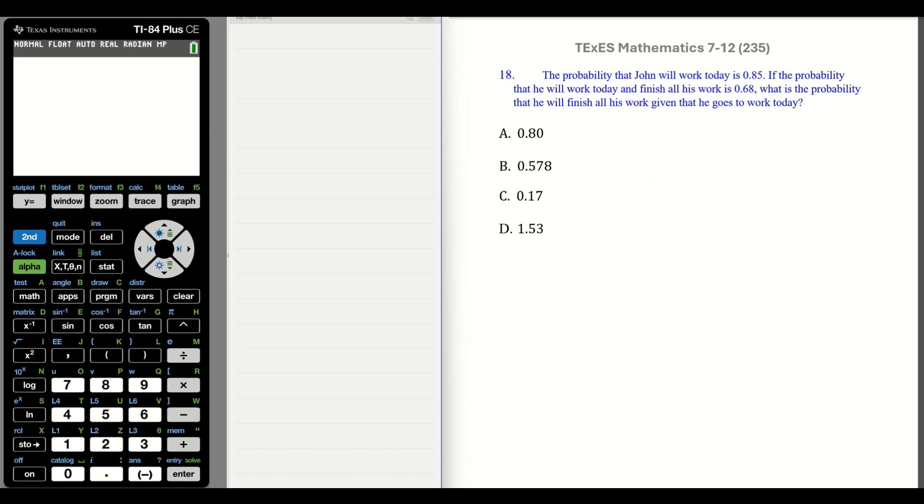Number eighteen. Probability that John will work today is 85.60%. If the probability that he will work today and finish all his work is 68%, what is the probability that he will finish all his work given that he goes to work today? These events, just like the last question, they're dependent. They're tied together. And the hint is the word and. So we have two events: that he goes to work and he finishes all his work.